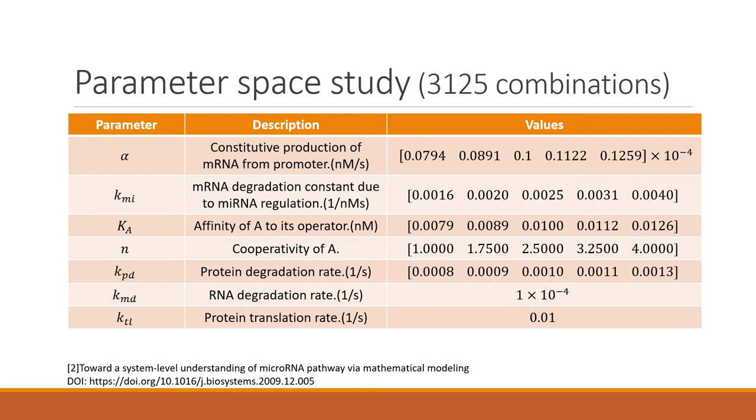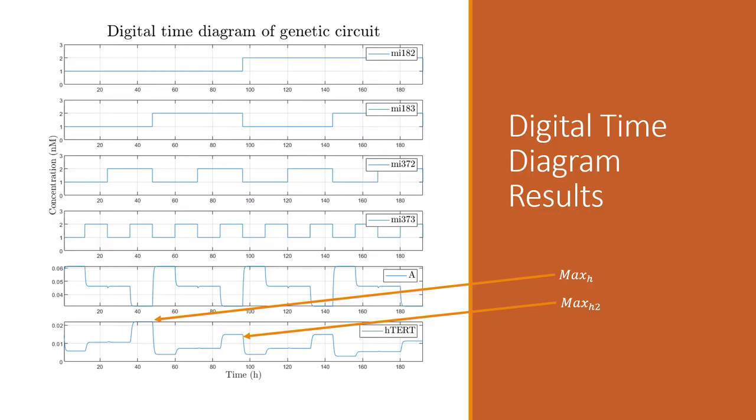So here I can show you one of the results. This is the results for the best performing circuit. Here we can see a digital time diagram of the inputs. So here are all the possible inputs. This time span is 12 hours, from here to here.